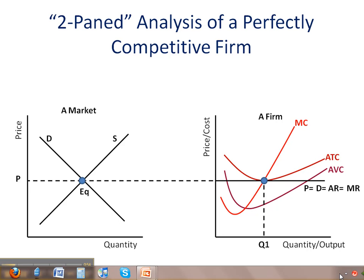Once again, we're going to start with our two-paned analysis here, with the market on the left pane and the firm on the right pane. Notice my diagram of the firm — in this particular case, I've added the average variable cost curve, or the AVC. Remember what variable costs are; we covered those a couple of weeks ago in class. That's going to become a little bit more important later on in this analysis.